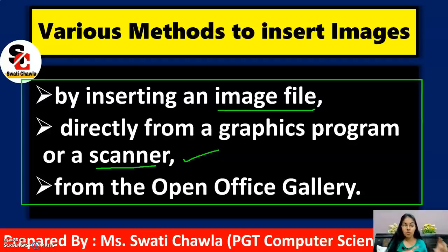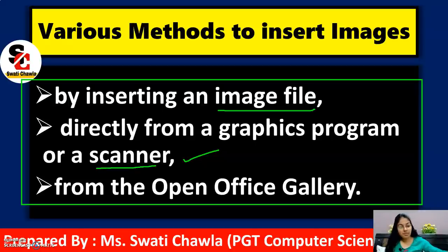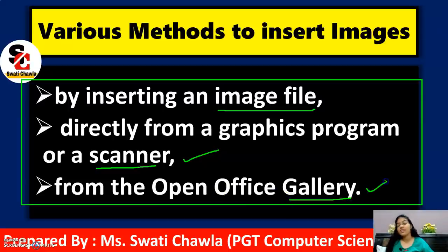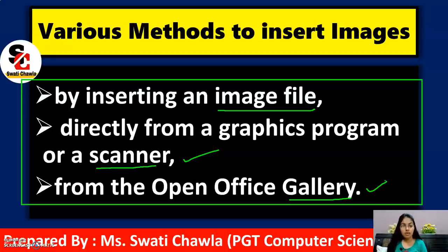Suppose you have a book — you can insert a picture from it into OpenOffice Writer using a scanner. You place the book page on the scanner, scan it, and insert it into your document. The third method is from the OpenOffice Gallery. Those familiar with Microsoft Office know the clip art option — here, instead of clip art, we have the gallery option.